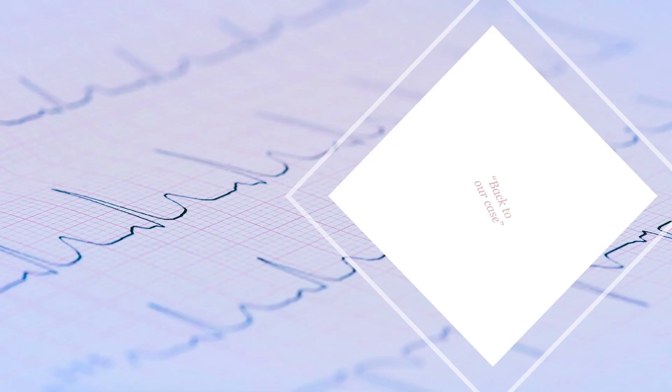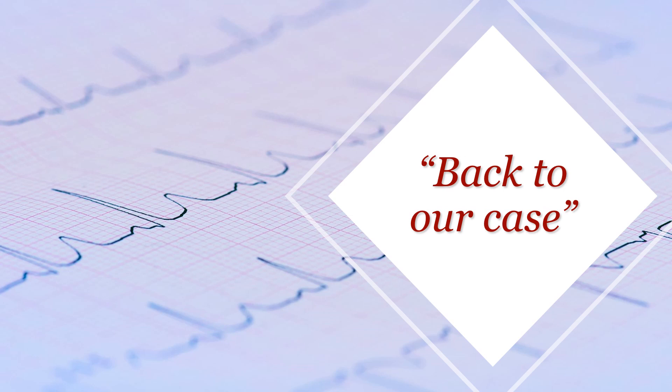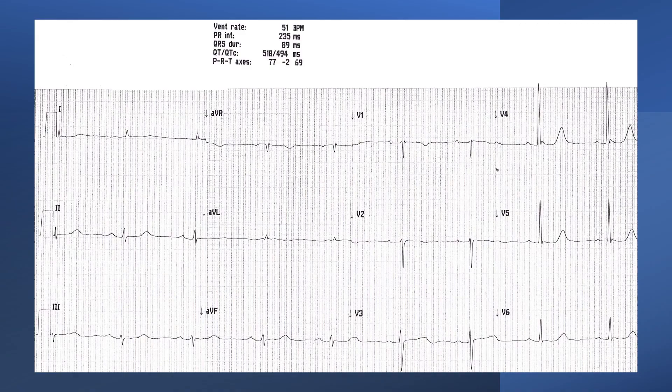Let's go back to our case and figure out what happened. This was the ECG. What we can see here is sinus brady, first degree heart block, low voltage ECG especially in the limb leads (I, II, III, AVR, AVL, AVF), long QTc, and T wave inversion in AVL, V1 and V2. This is what raised the suspicion that this is a likely hypothyroid case.